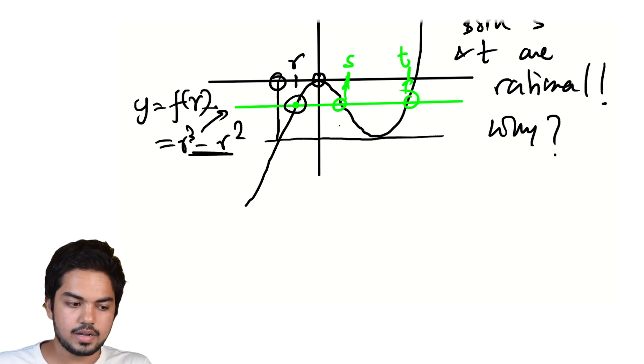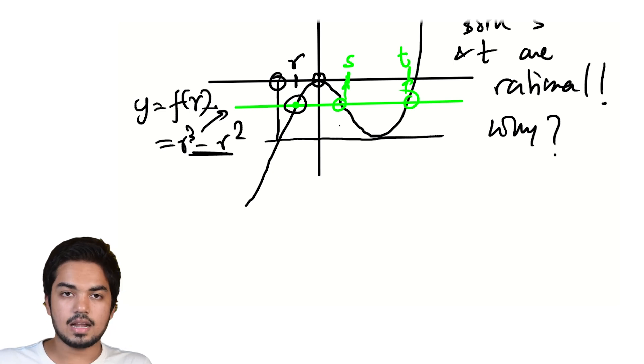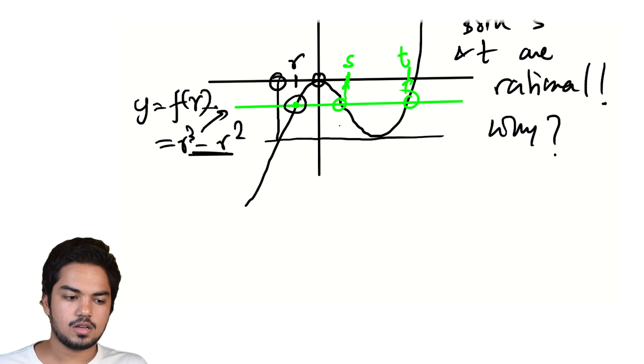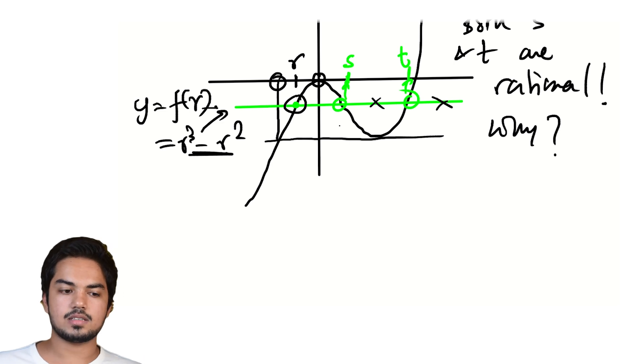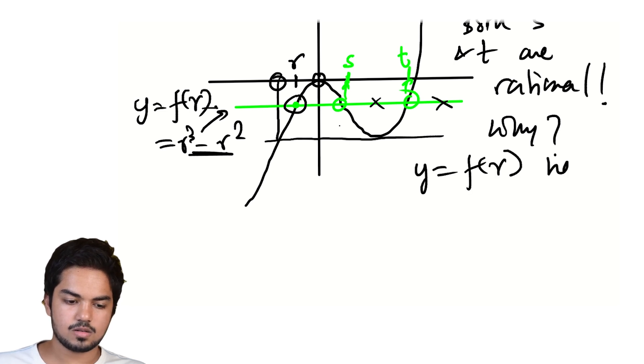So you have a rational point on a rational line, which means that every other point on that line is going to have rational coordinates. This is just using a two-point form. So every point on this line, any point you choose, not just those two points S and T, any other point has rational coordinates. So in particular,